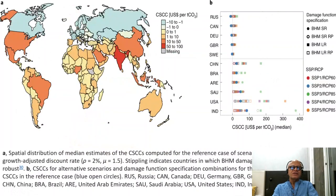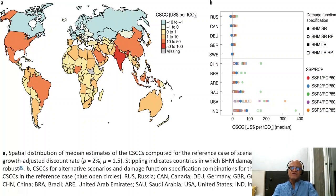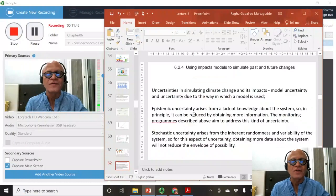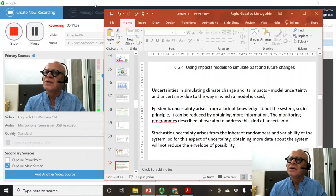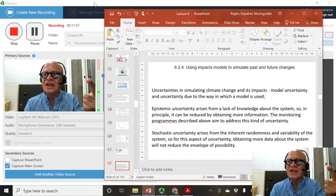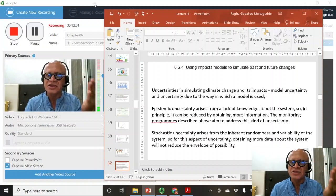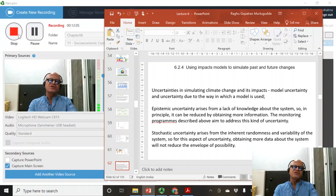This study also produced a global map of country-level social cost of carbon. India comes out at roughly fifty to one hundred dollars per ton of CO2, depending on the damage function specification and SSP/RCP scenarios used. Nonetheless, we know there is a social cost of carbon we cannot ignore. We will come to impact modeling in the next podcast. Emissions, climate change, direct climate impacts, socio-economic impacts, and the social cost of carbon are all important parameters that must be understood for adaptation and mitigation.